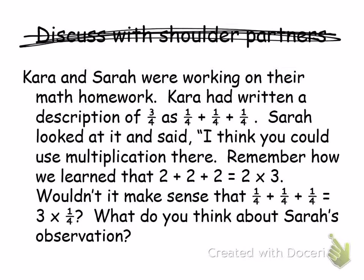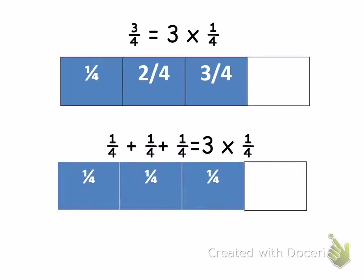When we're looking at this, I see repeated addition used right here. Remember that repeated addition is the same thing as multiplication. 2 is being added together 3 times. Therefore, the multiplication problem would be 2 times 3. So, Sarah says that 1 fourth plus 1 fourth plus 1 fourth is repeated addition. Therefore, it has to make sense that if you add them all together, it would be 3 times 1 fourth, ultimately giving you the same answer of 3 fourths.